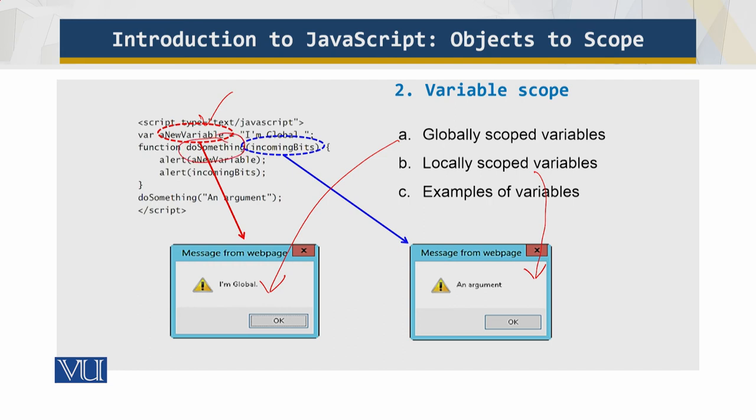Both variables are passed to the respective alert functions within the doSomething function. When the doSomething function is called, the contents of both variables are sent successfully and displayed on the screen as shown here. This is local and this is global - this is how the declaration was made.